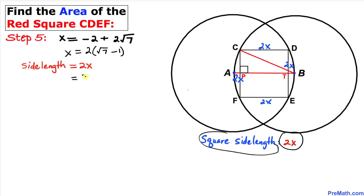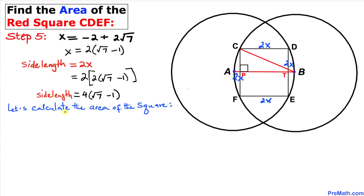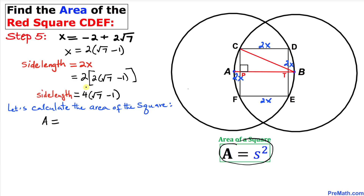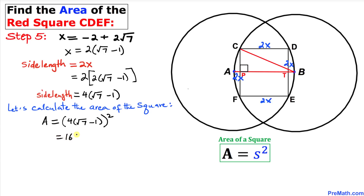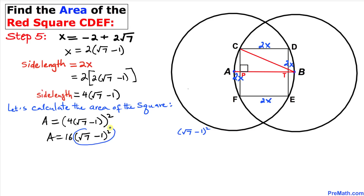So the side length equals 2 times x, which is 2 times 2(√7 - 1), giving us a side length of 4(√7 - 1). Now let's calculate the area of this red square. Using the area formula A = s², we write A = [4(√7 - 1)]², which equals 16 times (√7 - 1)². Let's now expand (√7 - 1)².